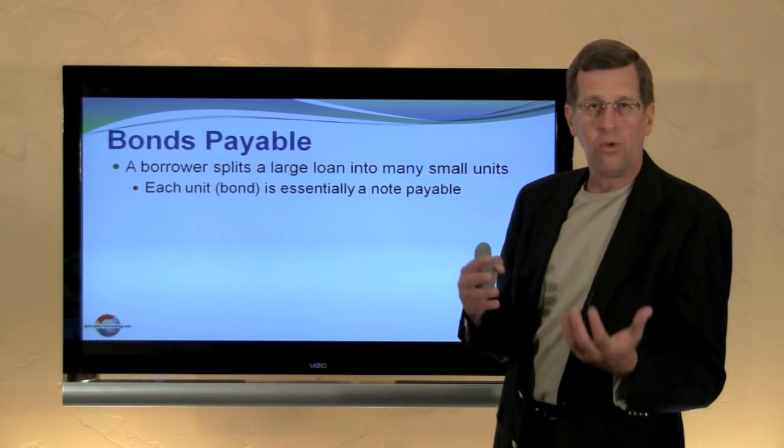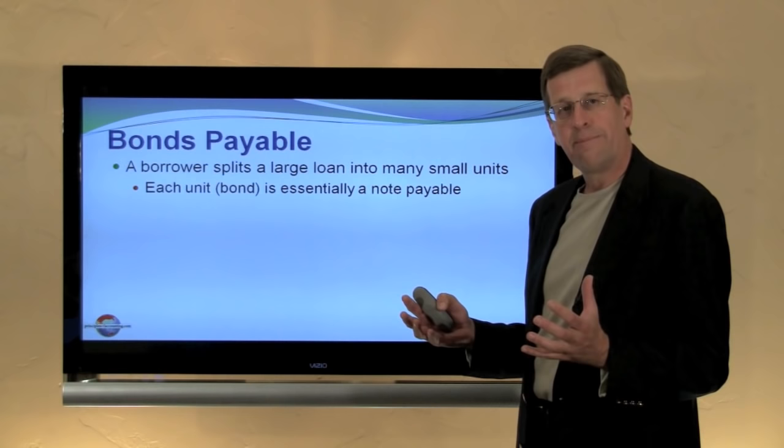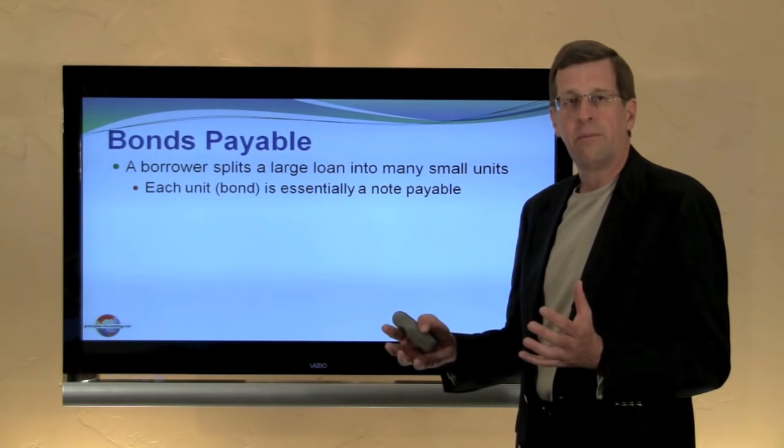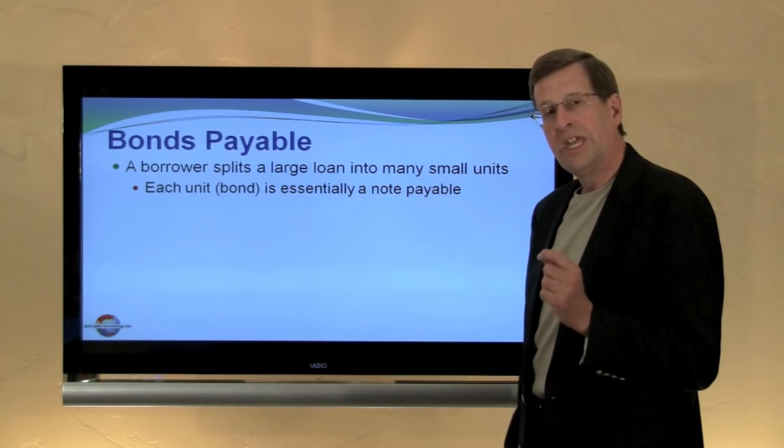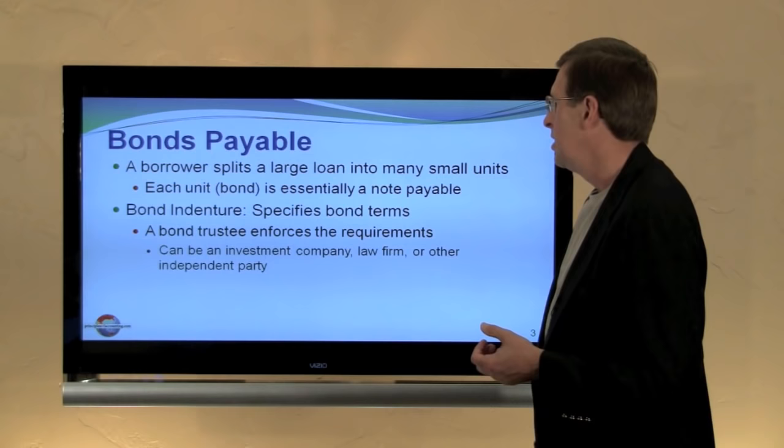The reason for using a bond rather than a note is that typically a note is one-to-one — one borrower and one lender. With a bond payable, a company can split its borrowings up into many divisible units. You might have a series of $1,000 bonds, and any number of investors who buy those bonds have essentially loaned money to the company. Each individual bond is essentially like a separate note payable, but we look at it as a package, or a bond issuance package.